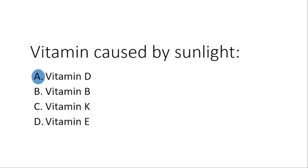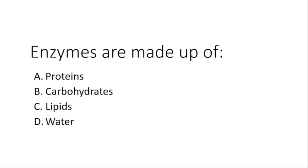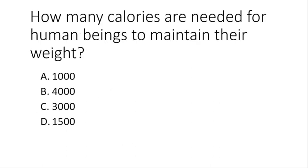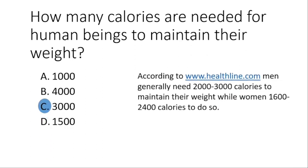Which vitamin is produced by sunlight? Vitamin D is believed to be produced in the human body under sunlight. Enzymes are made up of — the correct answer is proteins. How many calories are needed for human beings to maintain their weight? The correct answer from the given options is 3000 calories. According to Healthline.com, men generally need 2000 to 3000 calories to maintain their weight, while women need around 1600 to 2400 calories.